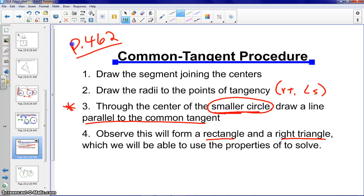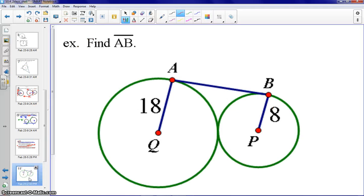So, again, draw your line of centers, draw your radii to your points of tangency, through the center of the smaller circle, draw a line parallel to the common tangent. So, let's follow these procedures as we go through our first example. First, draw your line of centers. I am missing one thing in this example. I'd like to write this down. Please note that circle Q and circle P are tangent. So, please add that in there.